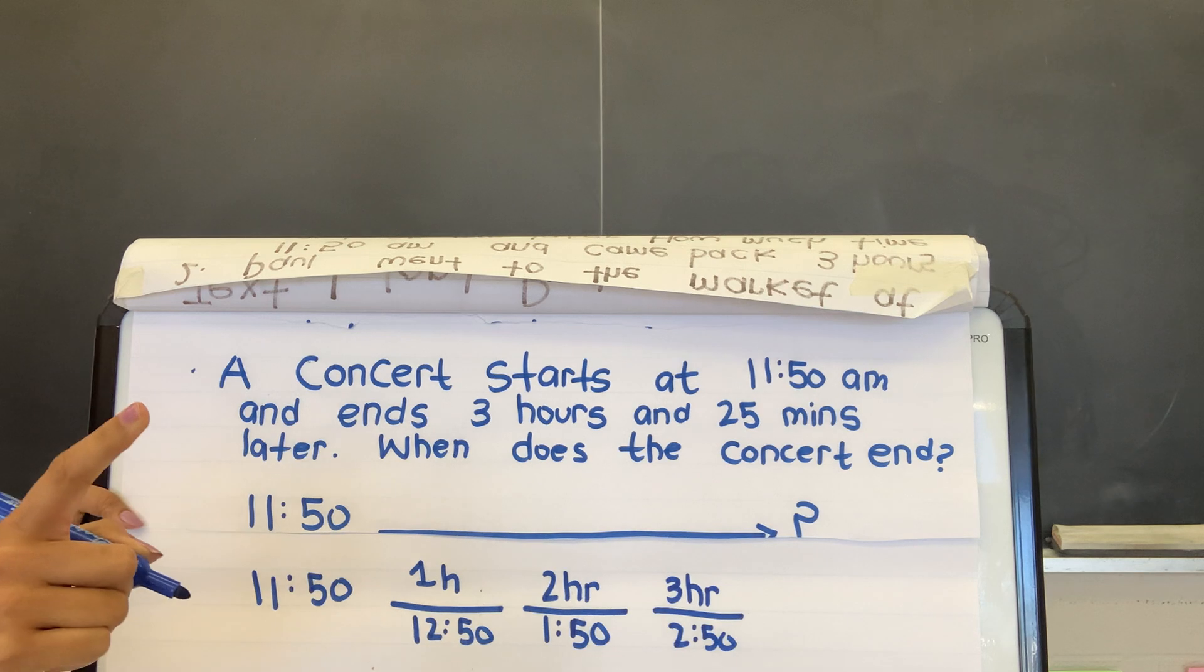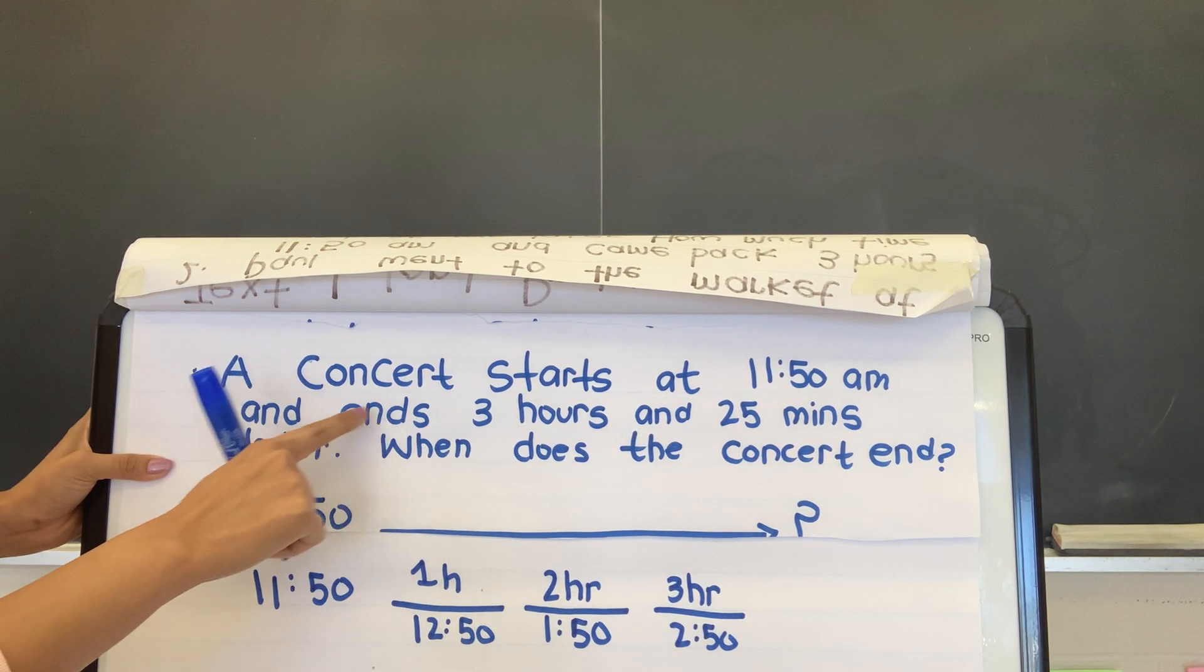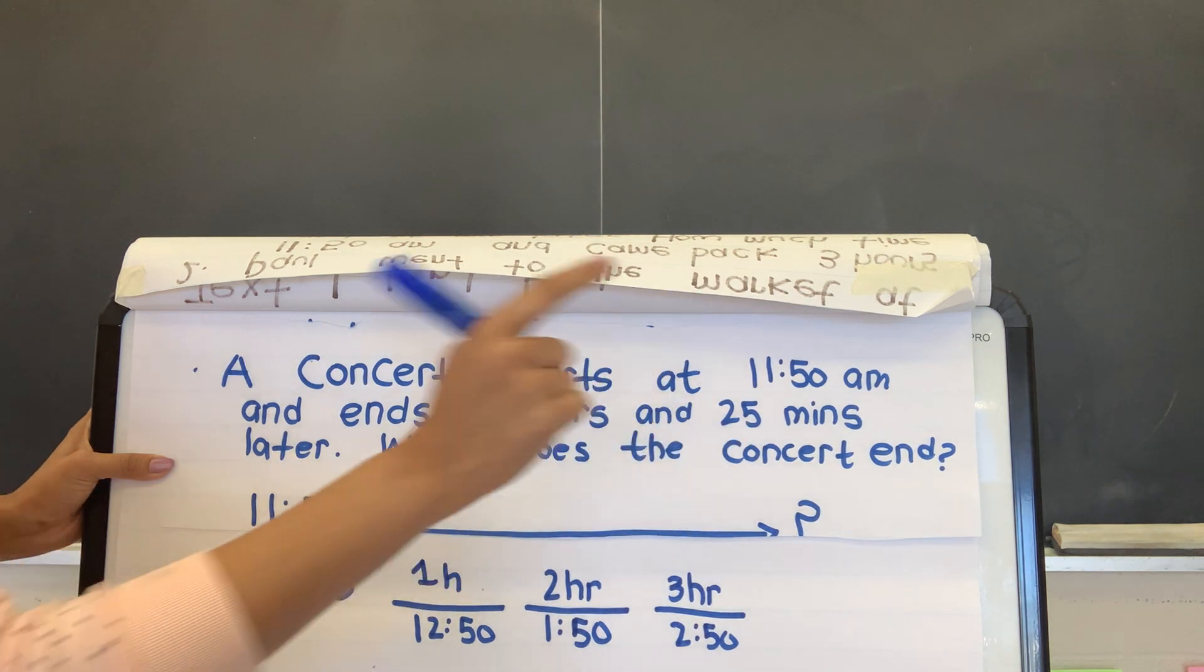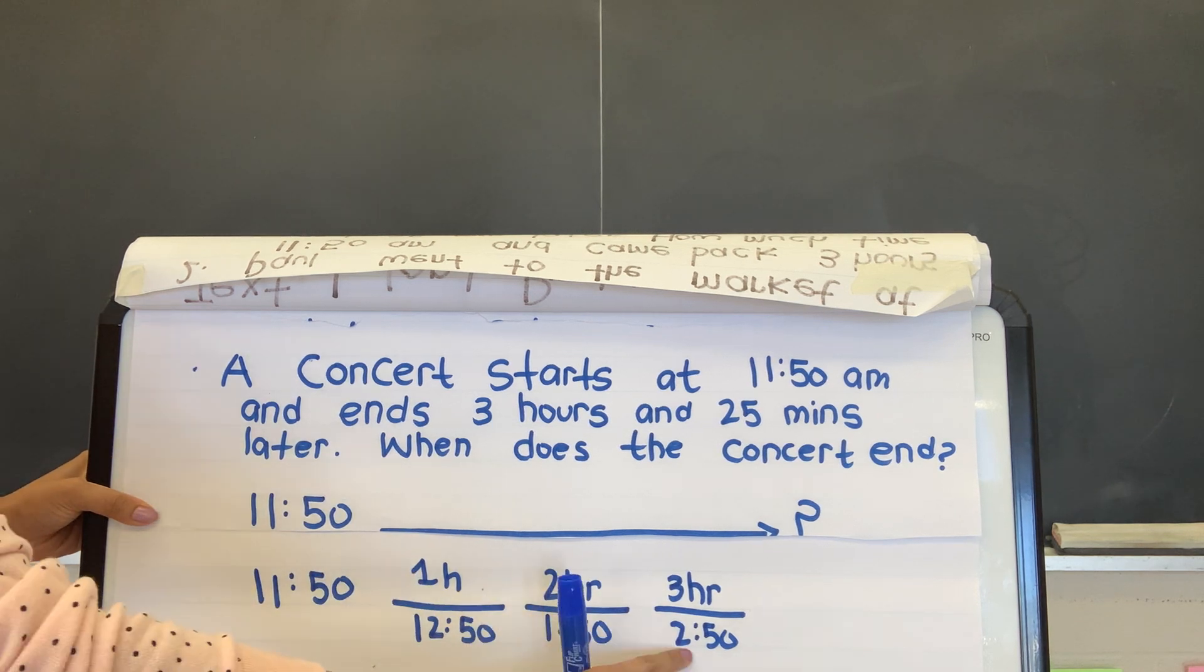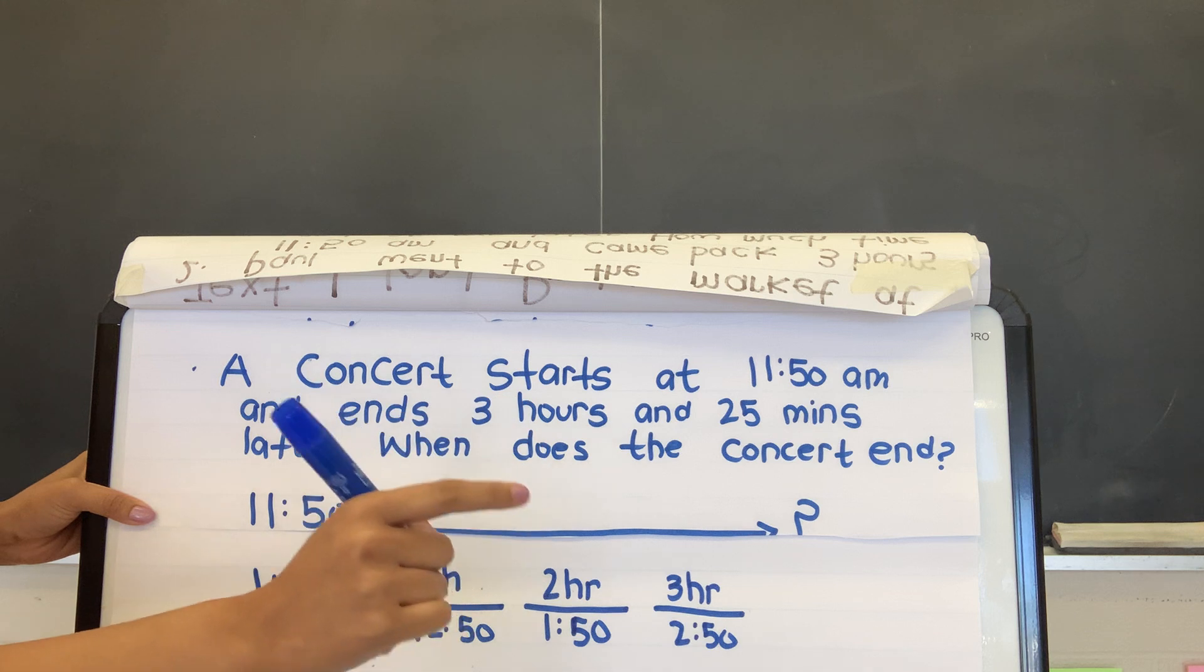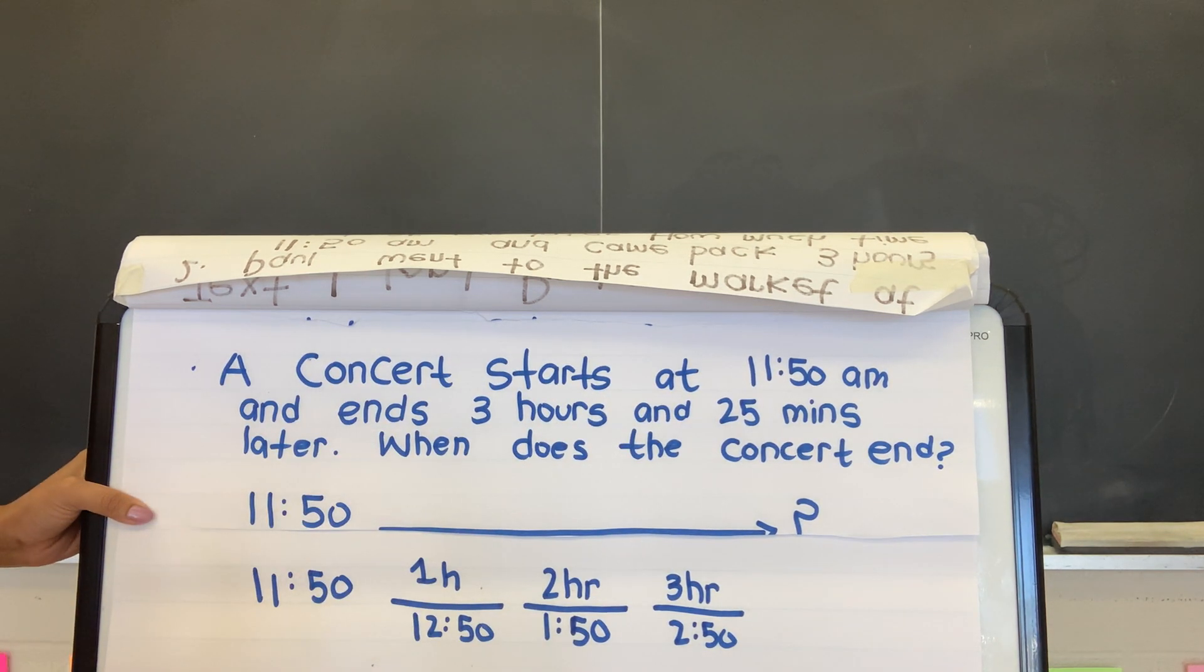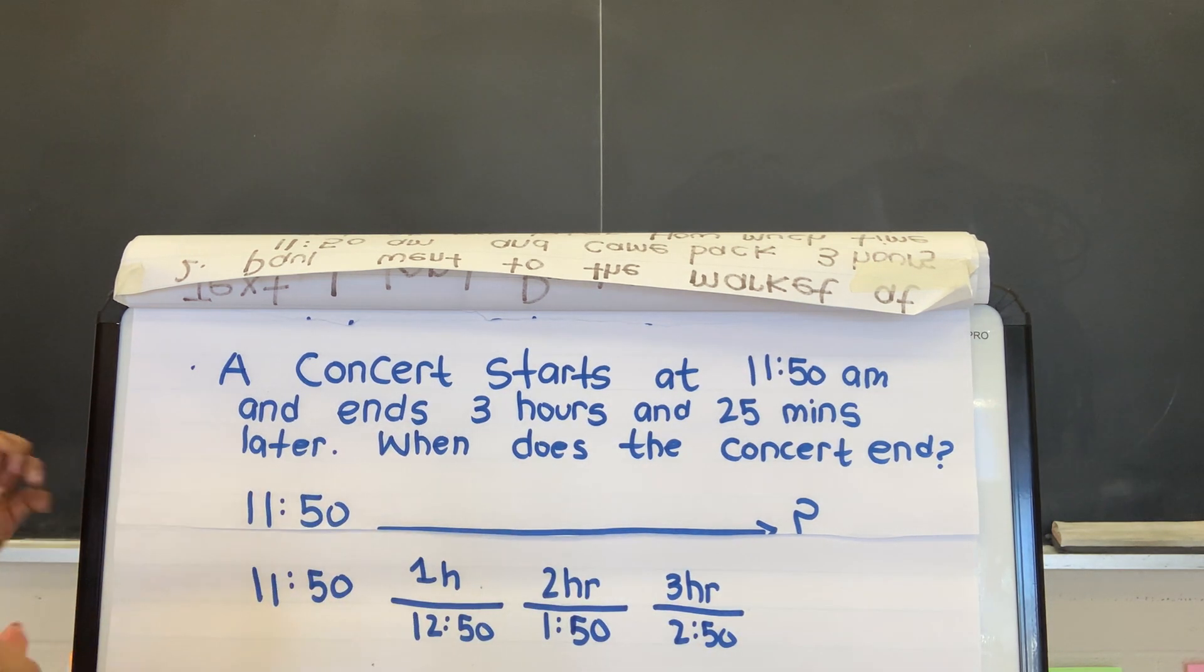I'm going to stop myself, and I'm going to look at the question. So we know that the concert ends 3 hours and 25 minutes later. So right now, we know that at 2:50, it is 3 hours, and the concert is going to end in the next 25 minutes.